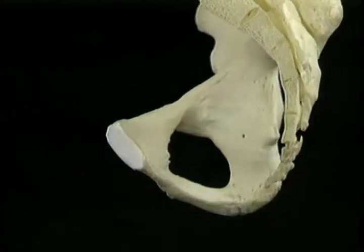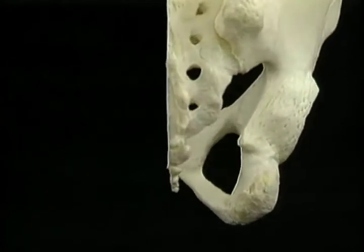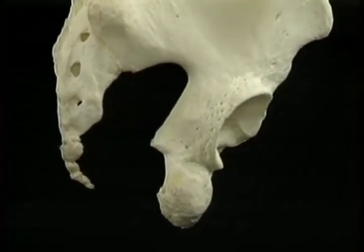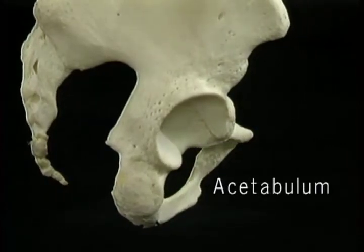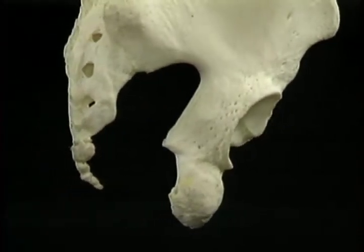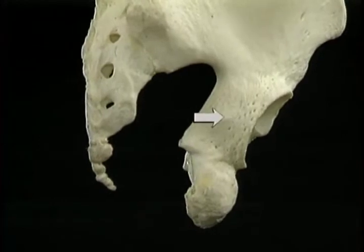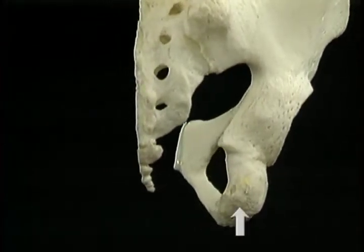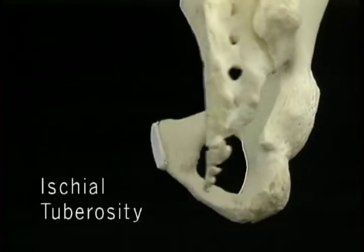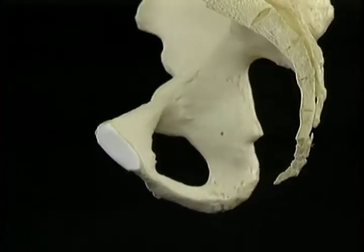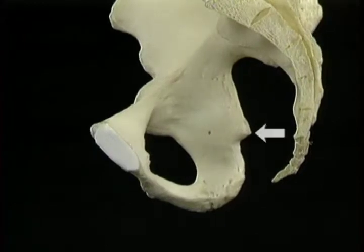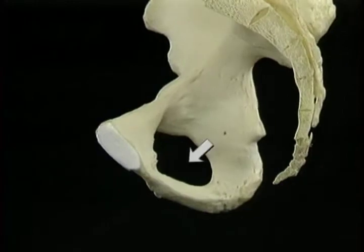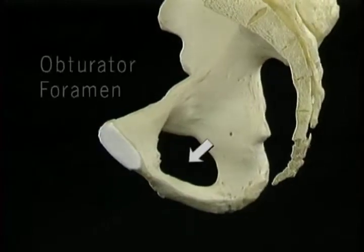It's smooth on the inside and on the back. It's deeply indented on the outside by the socket of the hip joint, the acetabulum. This is the body of the ischium, which ends below in this impressive projection, the ischial tuberosity, which is what we sit on. This sharp prominence is the ischial spine.